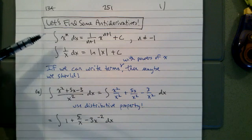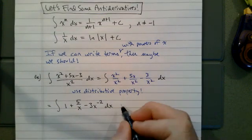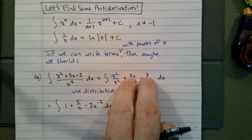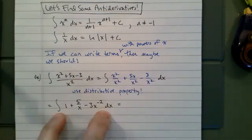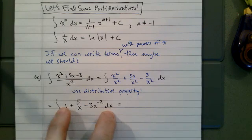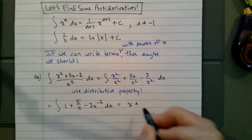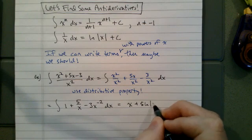Add one to the exponents, divide by the new exponent. All we did here was a little bit of algebraic sleight of hand — just doing some algebra. Now we're doing the calculus thing. That's why I still need to write the integral dx. The integral of 1 is just x. The integral of 1 over x is natural log of x, and it's multiplied by 5, so 5 natural log absolute value of x.